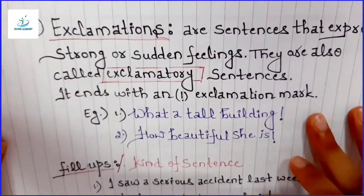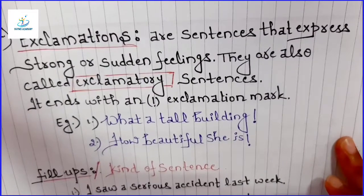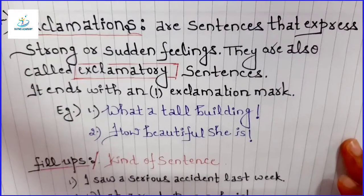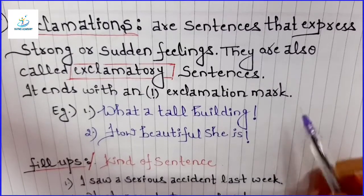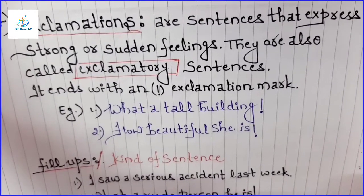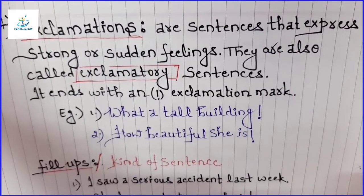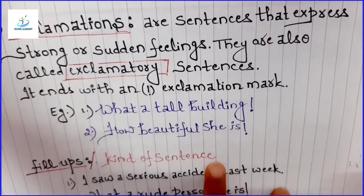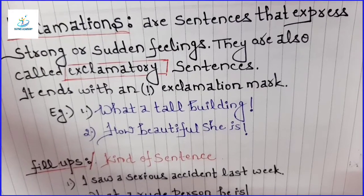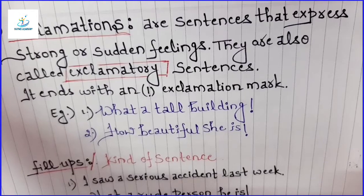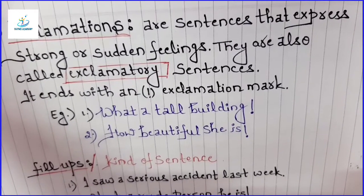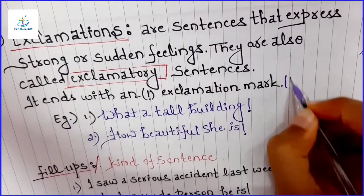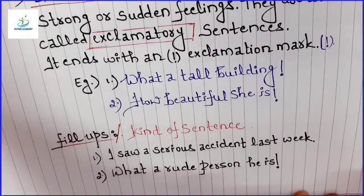Now, exclamations. Exclamations are sentences that express strong or sudden feelings. They are also called exclamatory sentences and they end with an exclamation mark. These involve a strong, sudden feeling — something more than expected, like 'How beautiful she is!' or 'What a tall building!' — whenever I see something beyond my expectations, I use an exclamation mark.